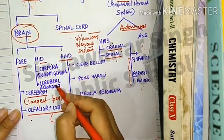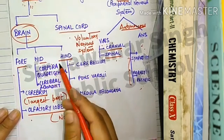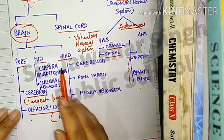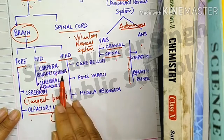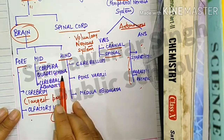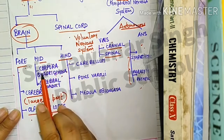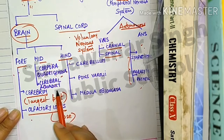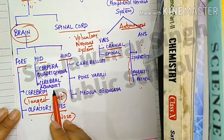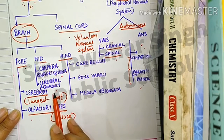Moving to the midbrain, it contains two parts: corpora quadrigemina and cerebral aqueduct.